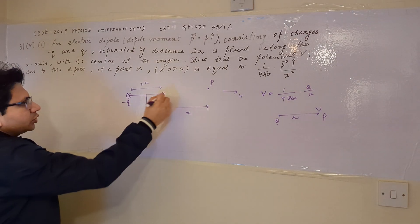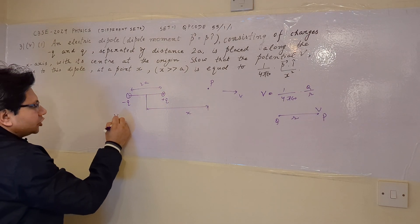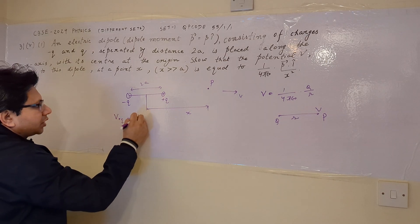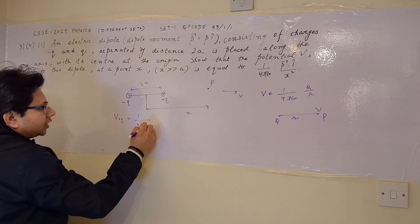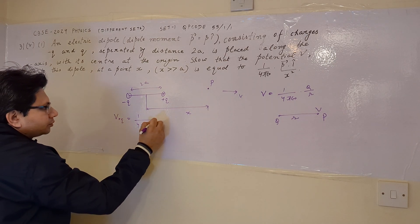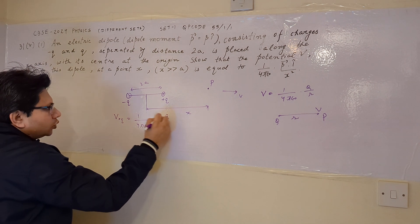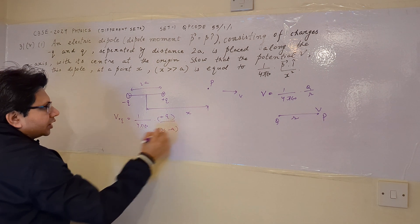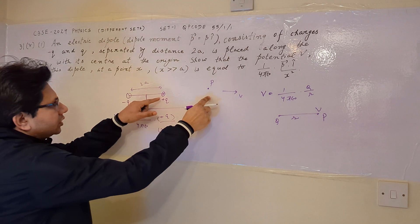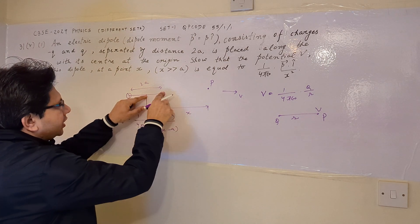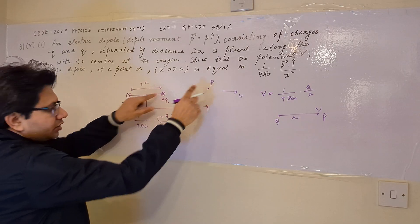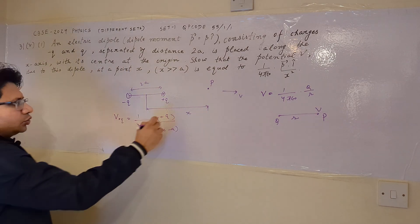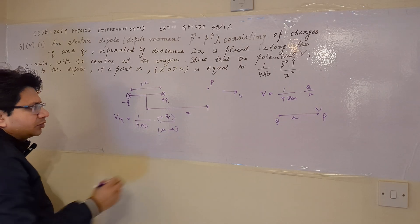Corresponding to the positive charge, the potential at point P is given by 1 upon 4 pi epsilon naught times q upon (x minus a), because the total distance from the positive charge to point P is x minus a. So this is 1 upon 4 pi epsilon naught times q upon (x minus a).